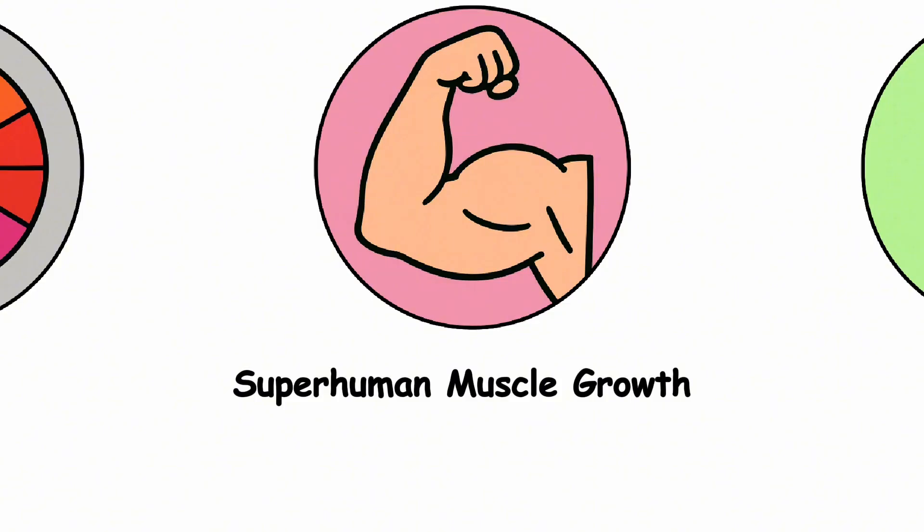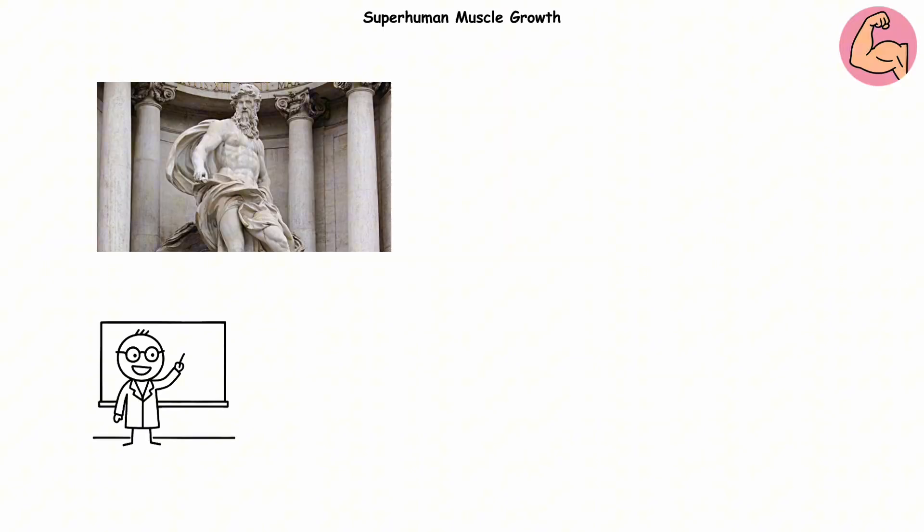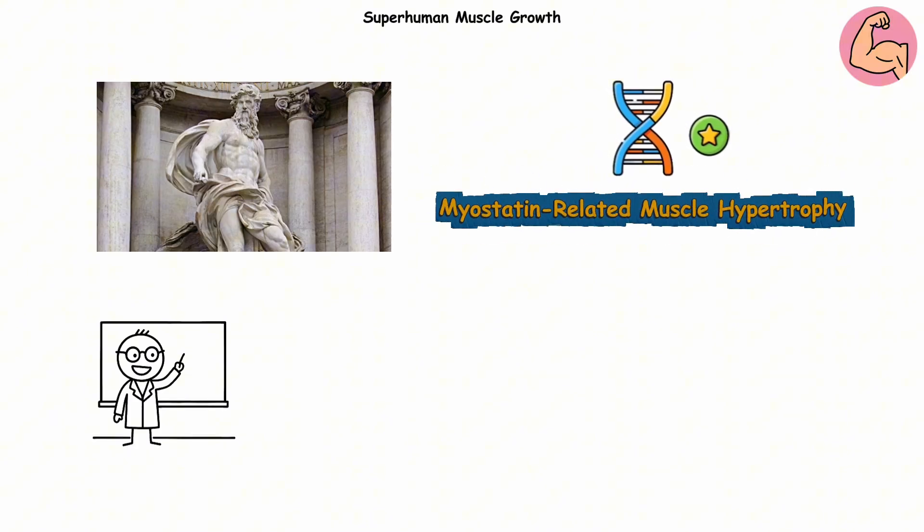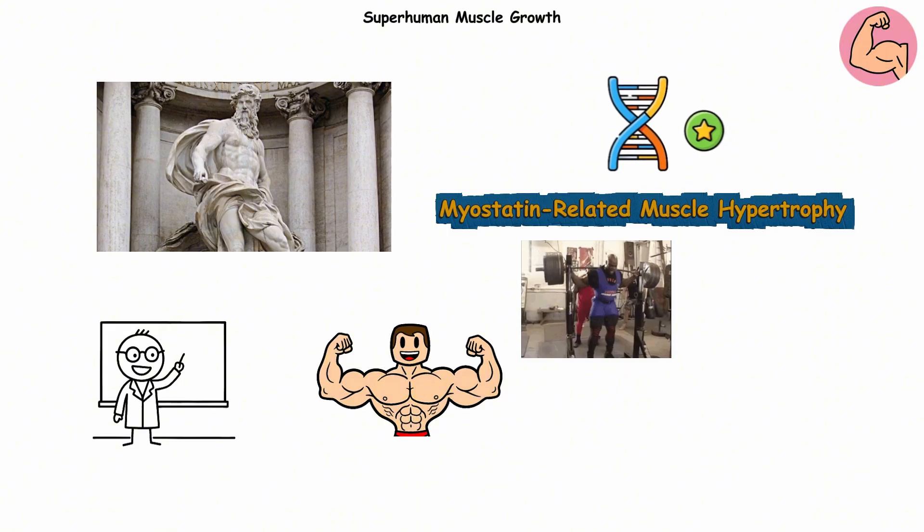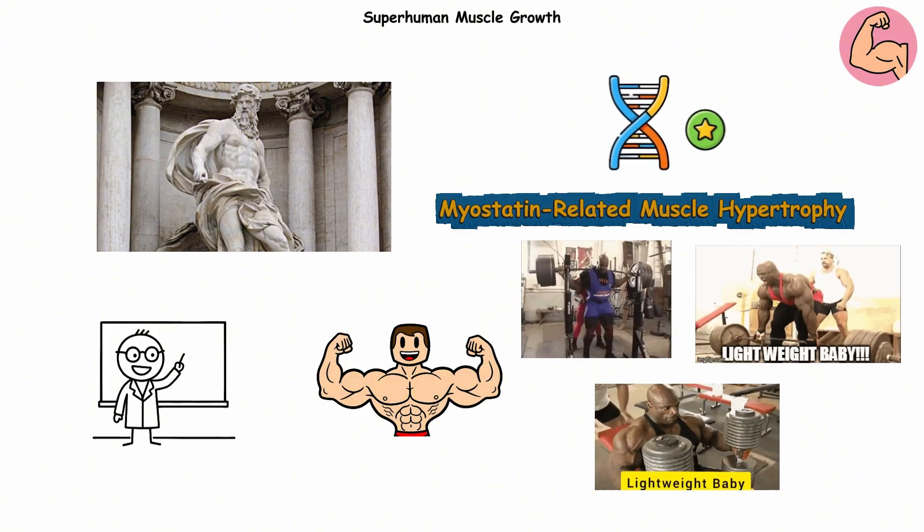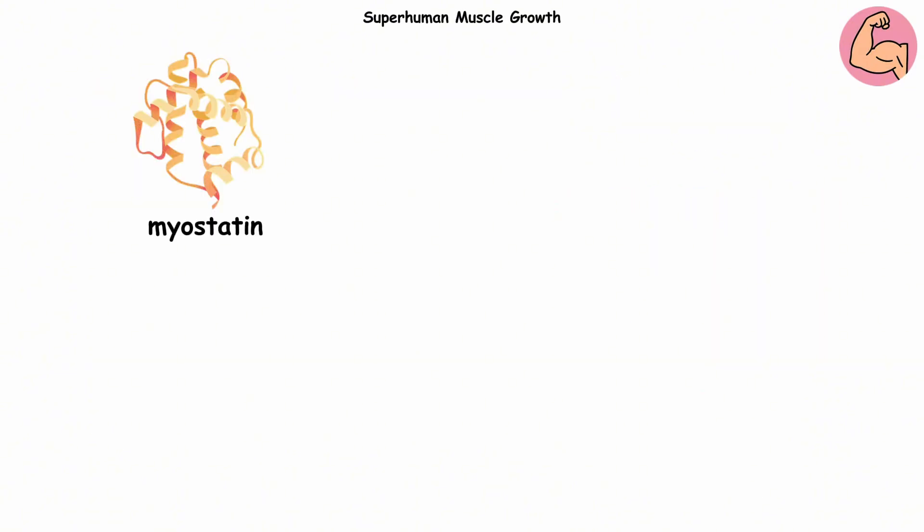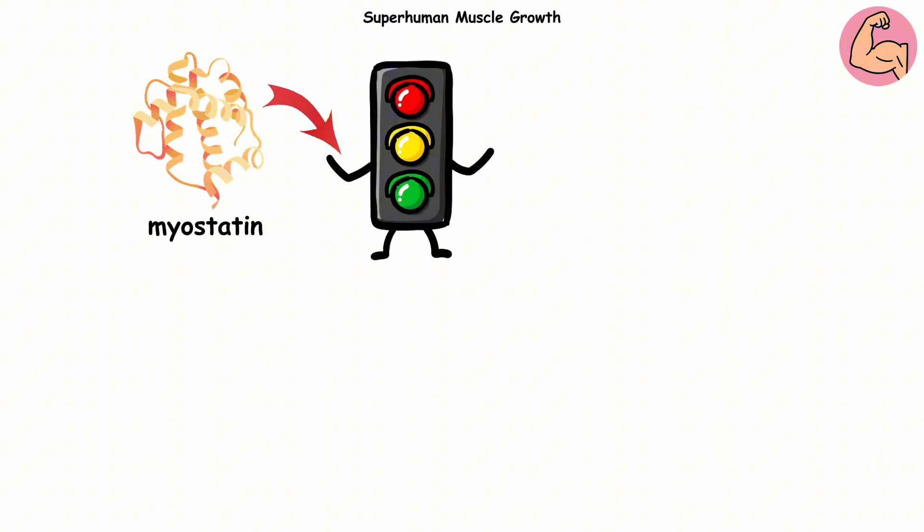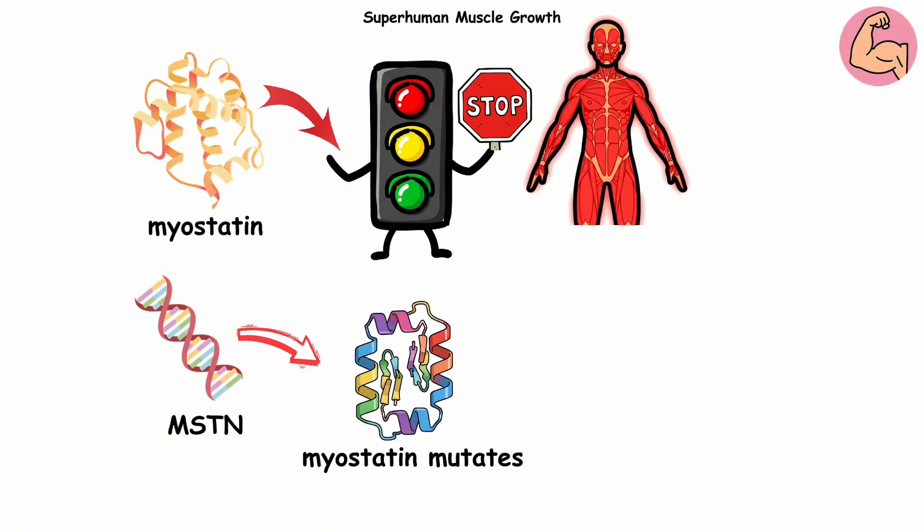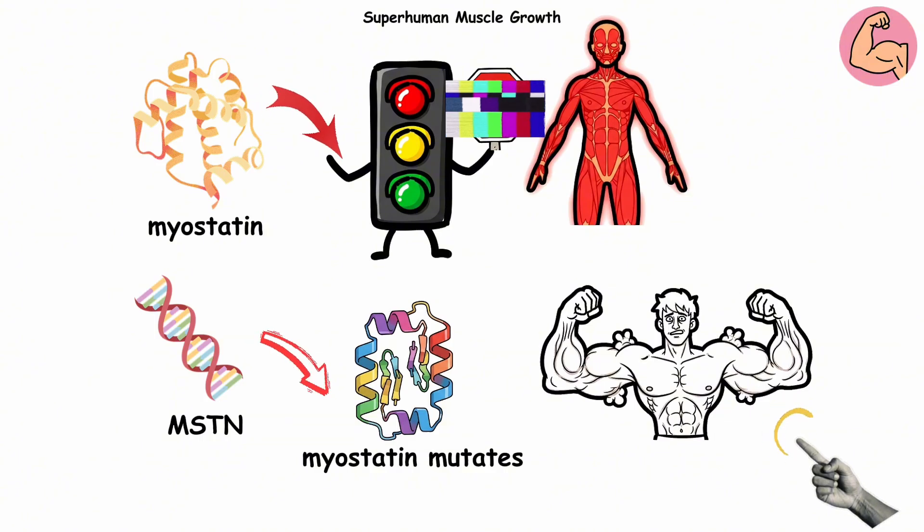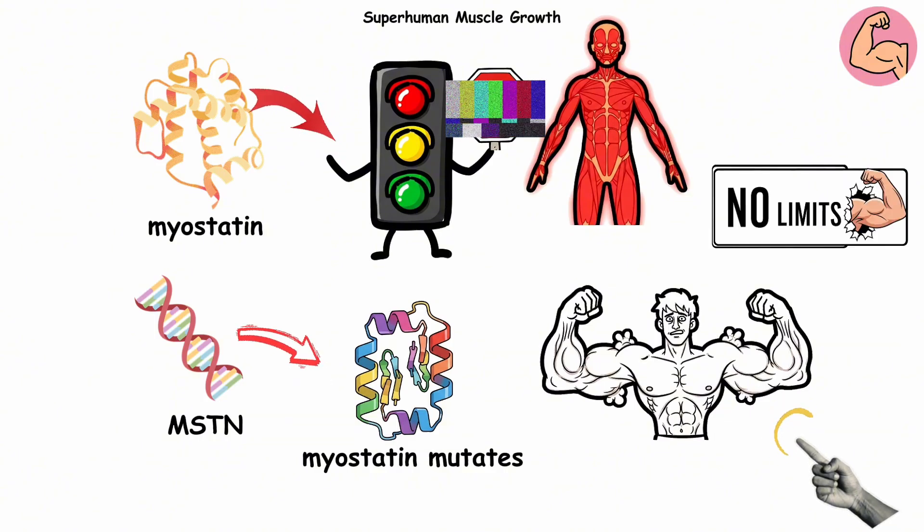Superhuman muscle growth. You know that person who looks like they were born a Greek god? They might actually have a real-life genetic power-up called myostatin-related muscle hypertrophy, nature's version of never skipping leg day, arm day, or any day at the gym. Normally, a protein called myostatin acts like your body's muscle traffic signal. It tells your muscles to slow down and not grow too big. But when the MSTN gene that makes myostatin mutates, that signal gets lost. The muscles just keep growing and building. It's like removing the traffic light and any speed limits for your muscles.